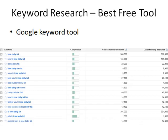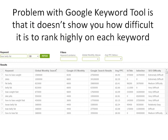When it comes to keyword research, probably the best free tool available is the Google Keyword Tool. If you type a phrase like 'lose belly fat' into the Google Keyword Tool it'll give you a bunch of keywords, the global monthly searches, the local monthly searches, and a rough estimation of competition in Google AdWords. But the problem with the Google Keyword Tool is it doesn't show you how difficult it actually is to rank highly on each keyword in the natural search engines — and that's where Traffic Travis is really, really helpful.